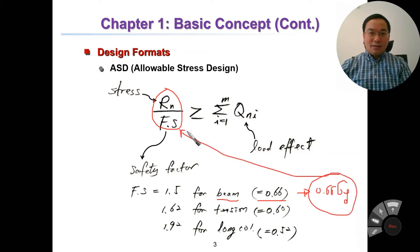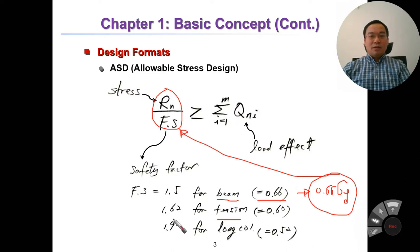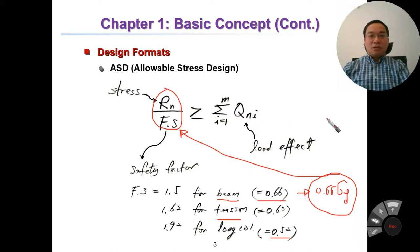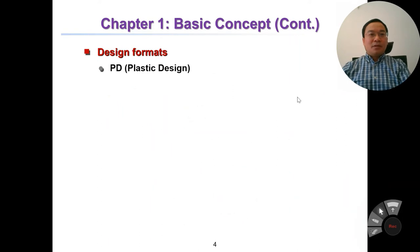For a tension component, FS equals 1.62, corresponding to 0.6 sigma_y. For a column, FS equals 1.92, corresponding to 0.52 sigma_y. So this factor depends on the load and structure type. You can calculate the stress and compare it to the allowable value — that is the Allowable Stress Design format.